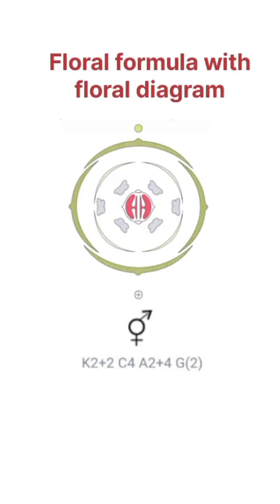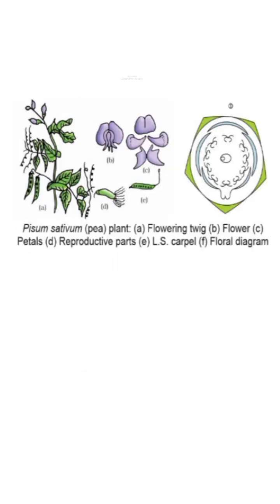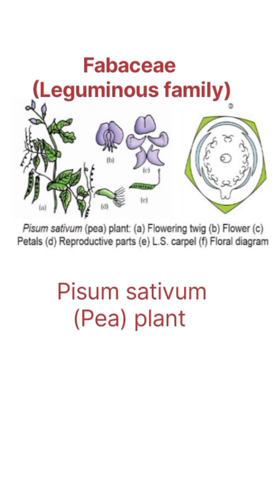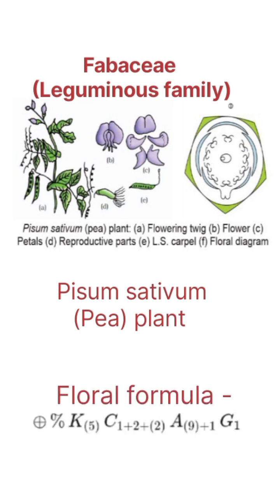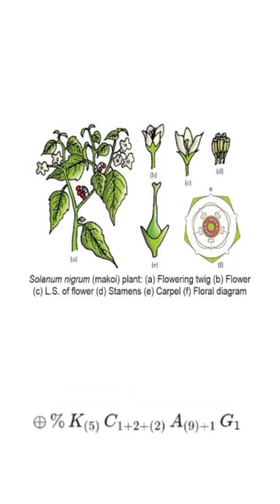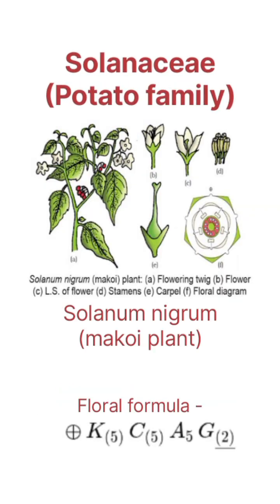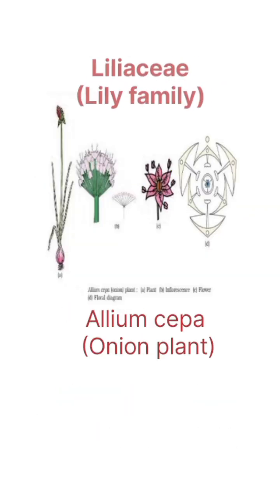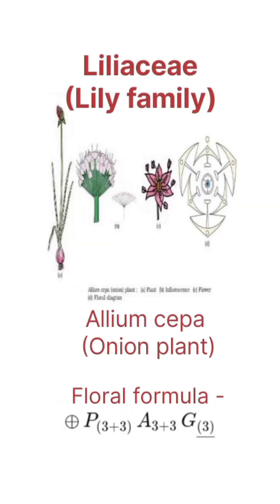Floral formula with floral diagram. Fabaceae — Leguminosae family. Next is Solanaceae — potato family. Next is Liliaceae — lily family.